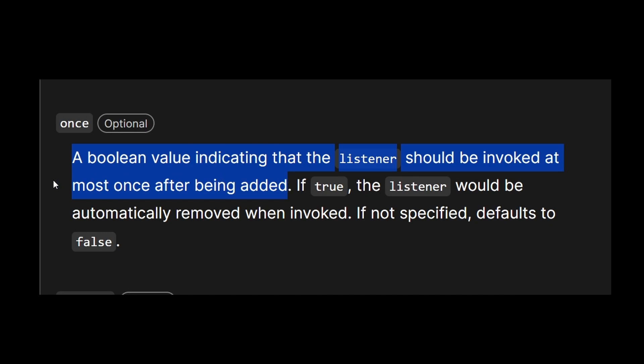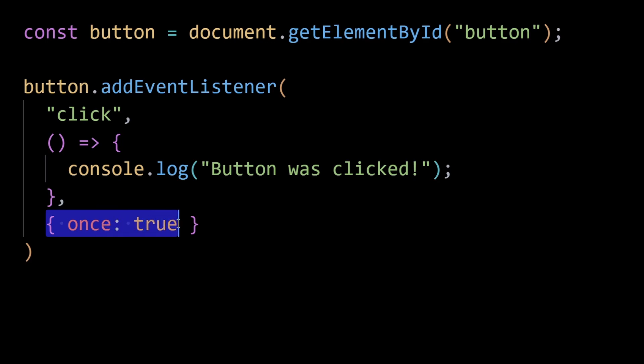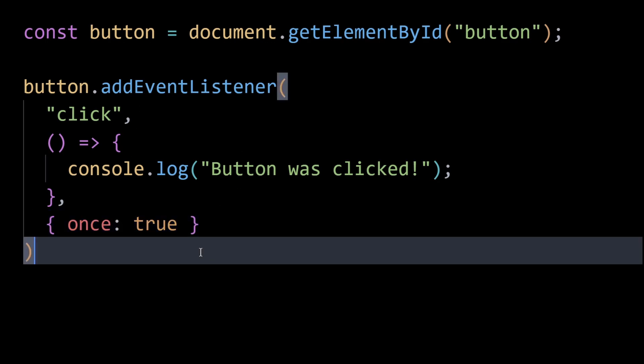Apart from that, you can also use the once: true option to prevent memory leaks. If you know that an event listener will only be needed once, you can use the once: true option when adding the listener. This automatically removes the listener after the event occurs, preventing any potential memory leaks.